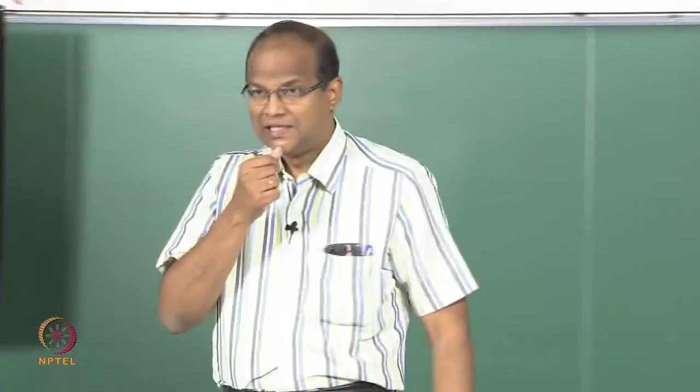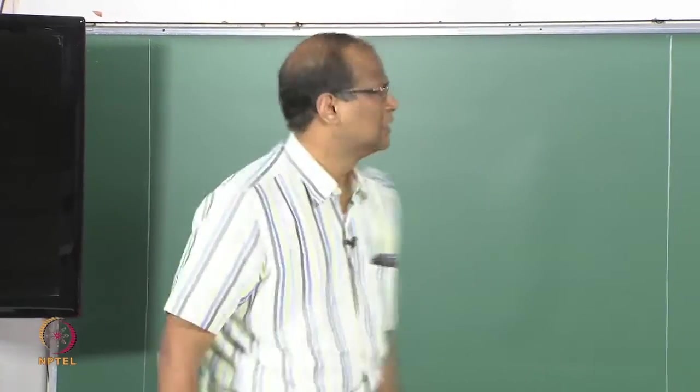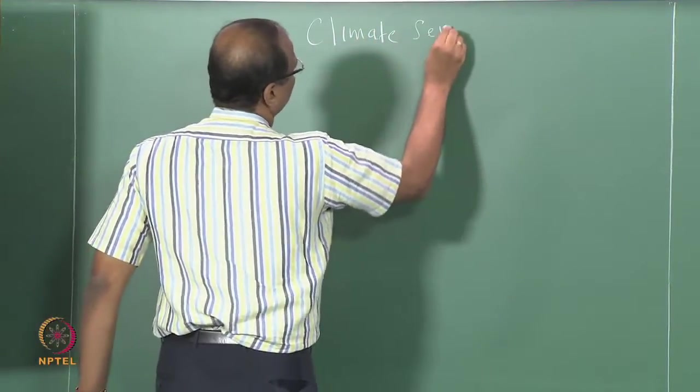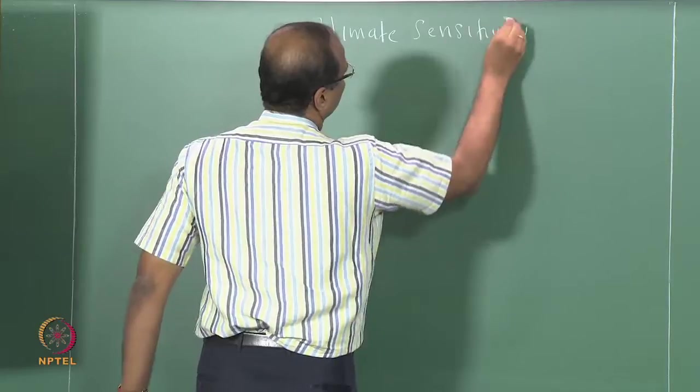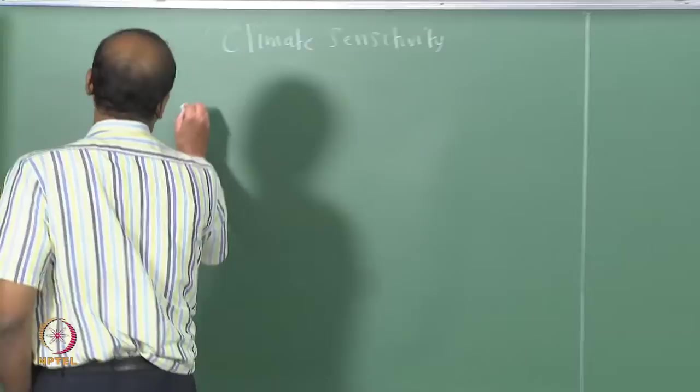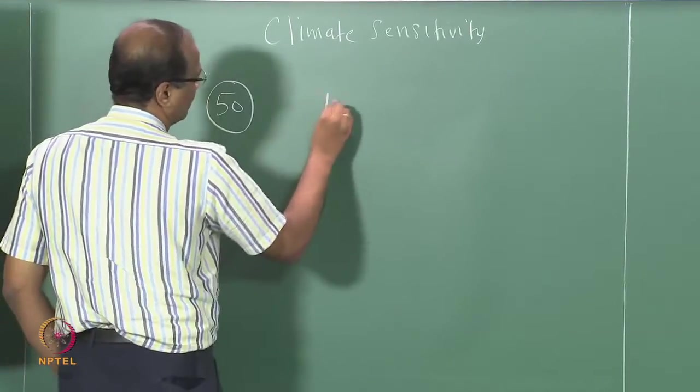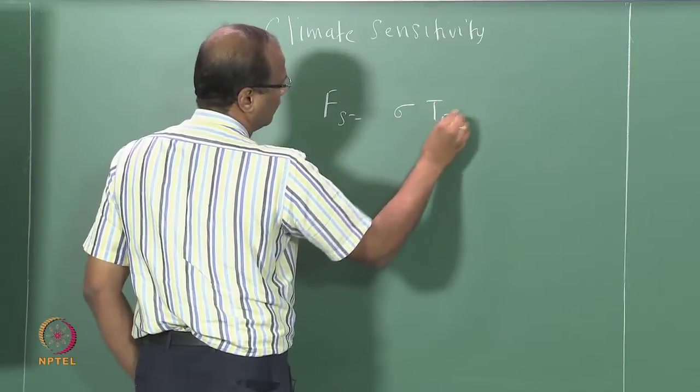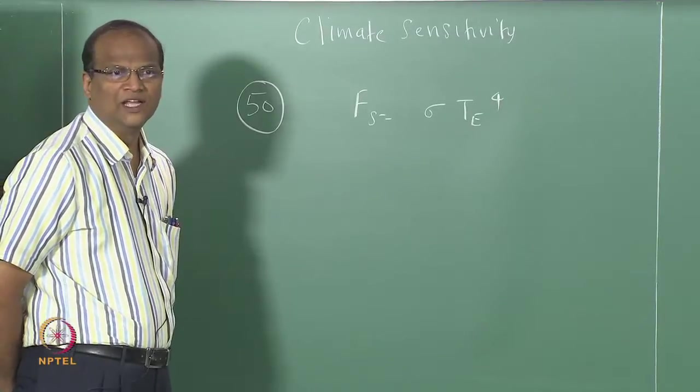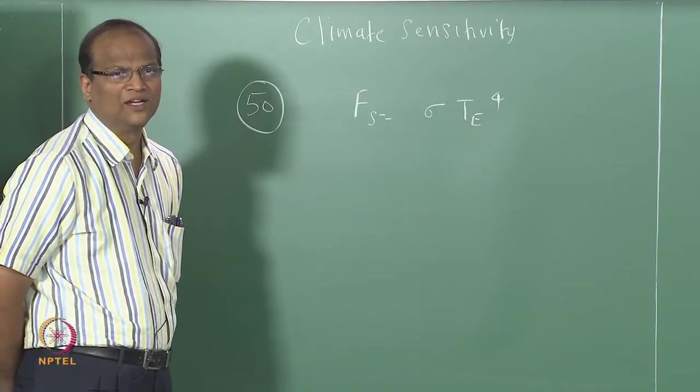Good morning. We will continue with our study of climate sensitivity and climate dynamics. What was the problem we considered in the last class? Problem number 50 was the solar flux reaching the earth, F equals sigma T to the power of 4, where T is the equilibrium temperature considering the earth to be a black body that turns out to be 255 Kelvin.